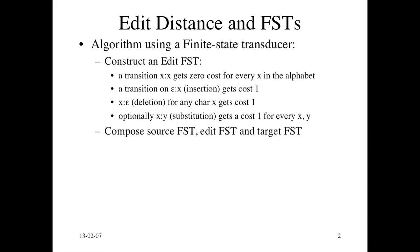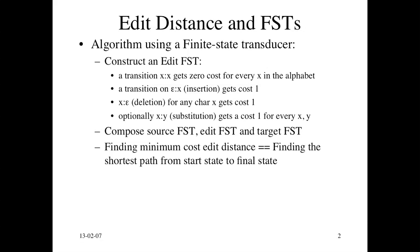Composition just does everything for us because now it'll find the edits that will take the source string to the target string. It's just using the composition algorithm. Finding the minimum cost edit distance is just finding the shortest path. So what's the minimum number of steps I need to convert the source string to the target string?